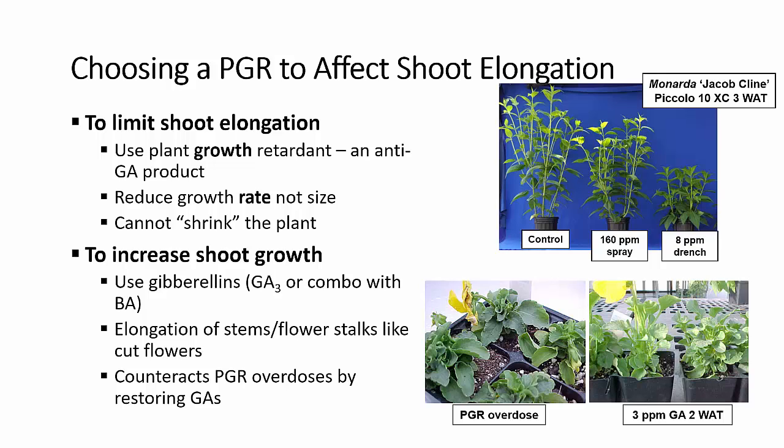In some cases we want to increase shoot growth. Then we use gibberellins or a combination of gibberellins and BA, or benzyl adenine. We can use this to elongate stems or flower stalks such as on cut flowers, or we can use it to counteract PGR overdoses by restoring the GAs to the plant.